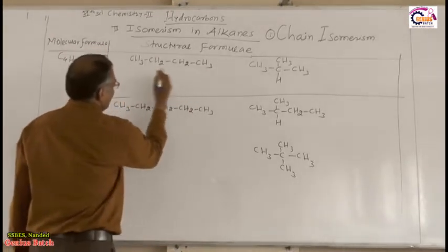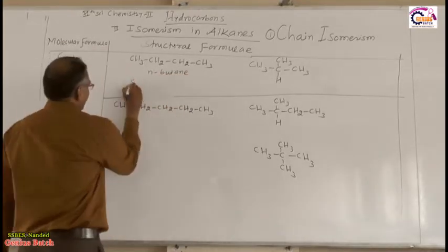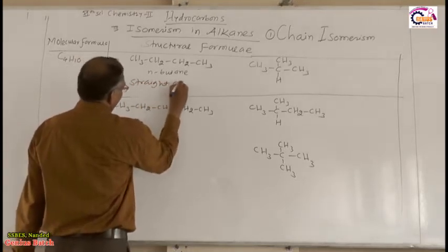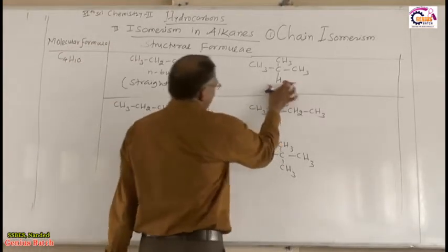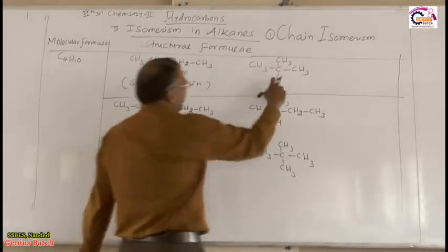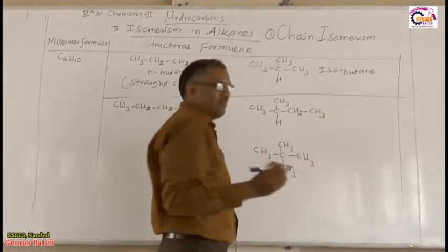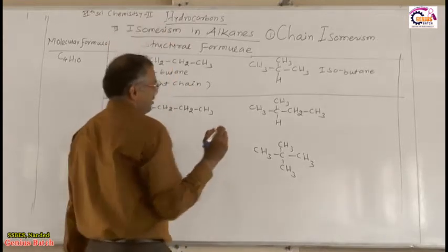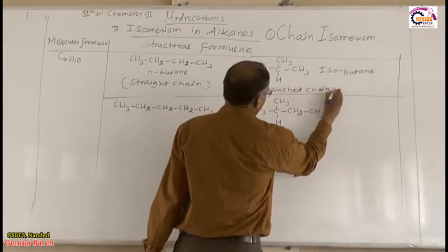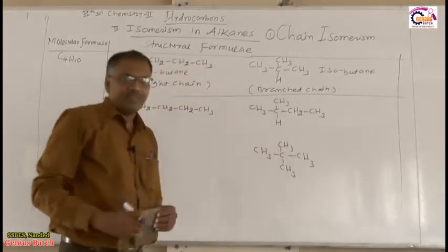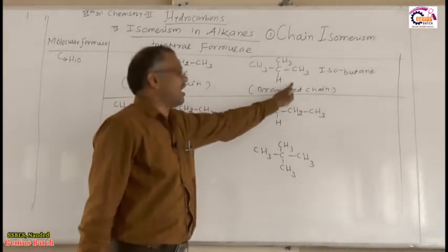The first structure is CH3-CH2-CH2-CH3, which is called n-butane. This is a straight chain because all the carbon atoms are in a continuous chain. The second structure is isobutane, which is a branched chain. So the compound having molecular formula C4H10 has two chain isomers.